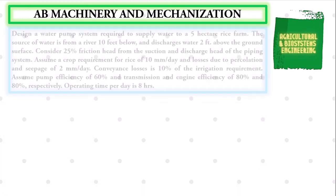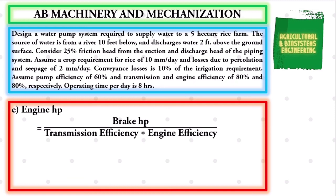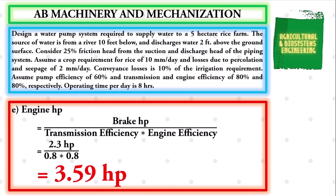The next value to solve is the engine horsepower or motor horsepower. The formula is: Engine HP = Brake HP ÷ (transmission efficiency × engine efficiency). Substituting: 2.3 ÷ (0.8 × 0.8), giving us a final value for engine HP of 3.59 horsepower.